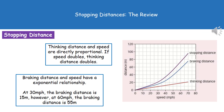We also need to understand the relationship between speed and the thinking and braking distances. For thinking distance, speed and thinking distance are directly proportional, meaning if the speed doubles, the thinking distance doubles. On the graph, the red line shows that they are directly proportional to one another.